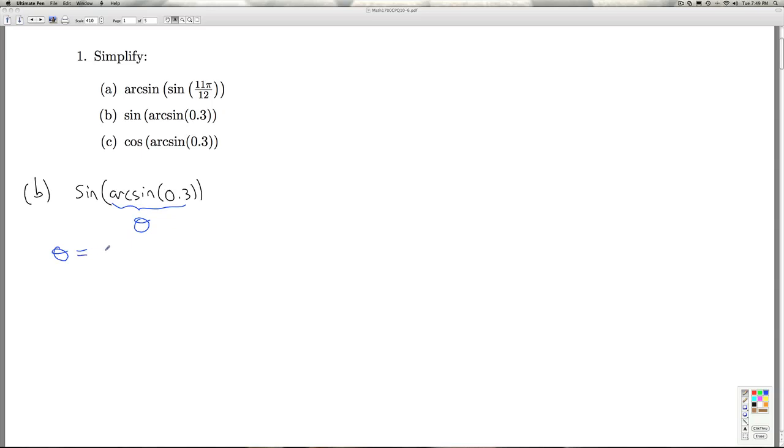So, if theta is the arcsine of 0.3, then theta's got to be an angle between negative π over 2 and π over 2 with the property that the sine of theta is none other than 0.3.